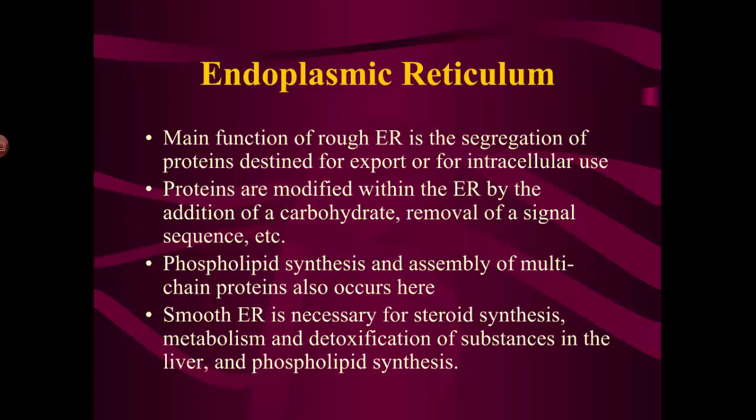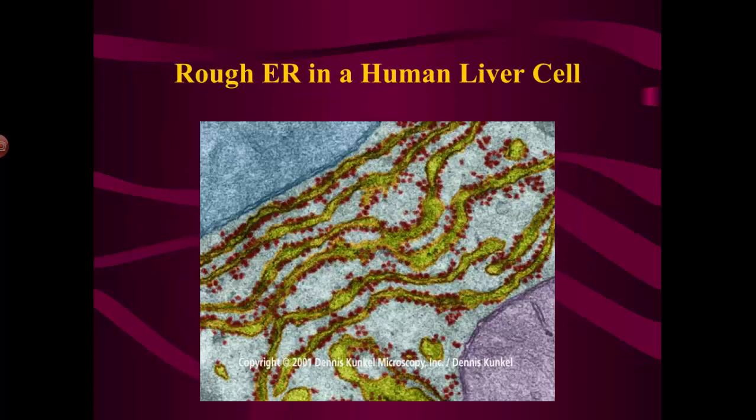Smooth ER is also used for steroid synthesis, detoxification of substances in the liver, and phospholipid or new membrane synthesis. You can also modify proteins in the ER to make lipoproteins or glycoproteins. In this image, the green lines are the endoplasmic reticulum — and it's rough ER, because those little red dots are ribosomes stuck all over it. In a human liver cell making lots of proteins, you'd have a lot of rough endoplasmic reticulum.